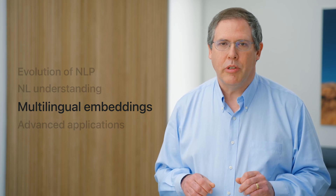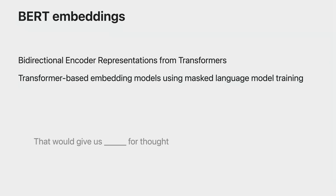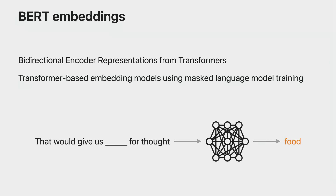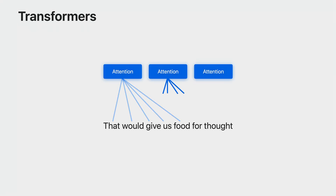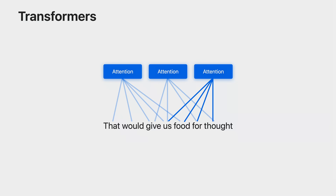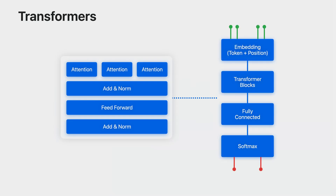Now let me turn to what's new this year in natural language. We now provide transformer-based contextual embeddings — specifically, BERT embeddings. That stands for Bi-directional Encoder Representations from Transformers. These are embedding models trained on large amounts of text using a masked language model style of training, where the model is given a sentence with one word masked out and asked to suggest that word. Transformers are based on an attention mechanism — specifically multi-headed self-attention — which allows the model to take into account different portions of the text with different weights in multiple ways at once. This multi-headed self-attention mechanism is wrapped up with multiple other layers and repeated several times, providing a powerful and flexible model.